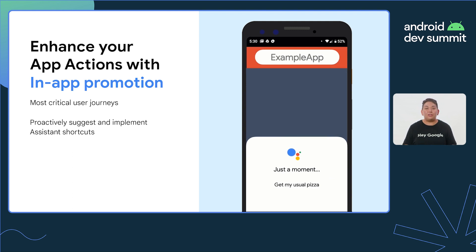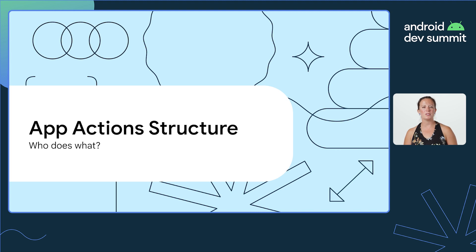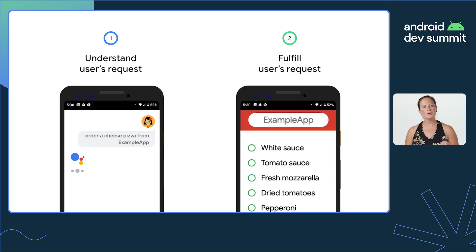In-app promotion allows developers to initiate the creation of an Assistant shortcut by constructing a special deep link that has the app's own deep link parameters inside it. Let's take a closer look at how these user journeys are handled at a high level between the Android app and Google Assistant. You can think about this experience as having two parts: first, processing the user's input and understanding their request, and second, fulfilling the user's request.